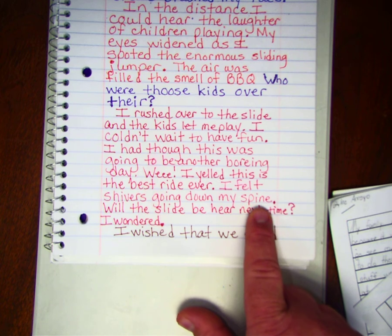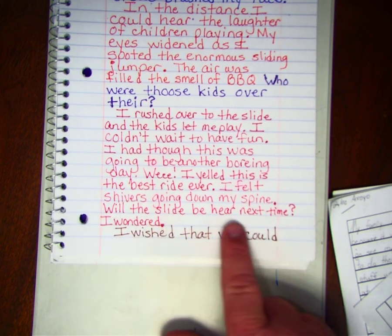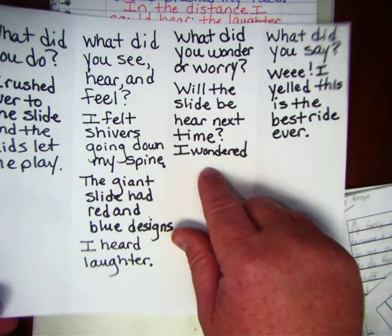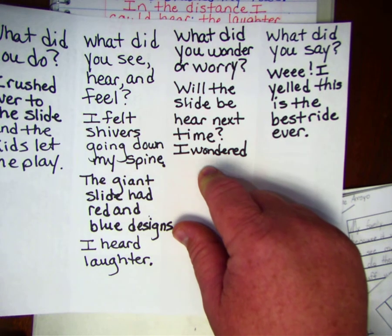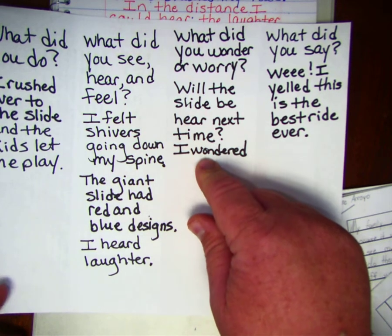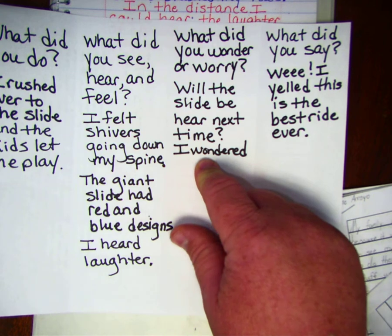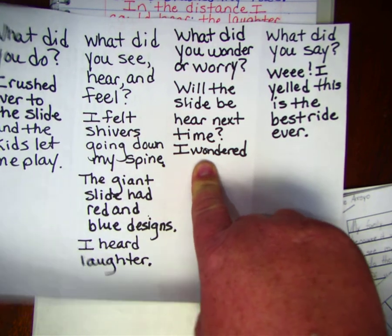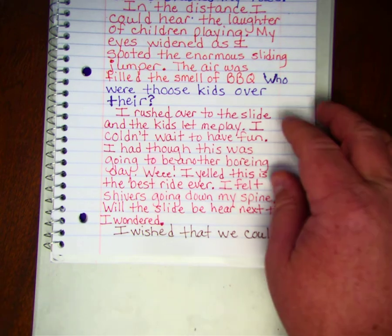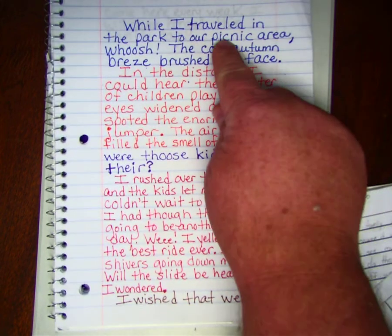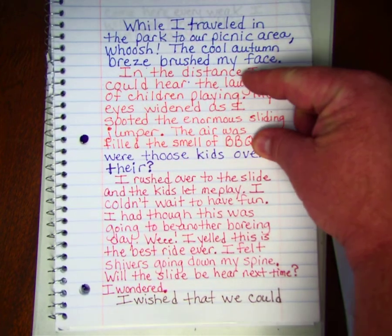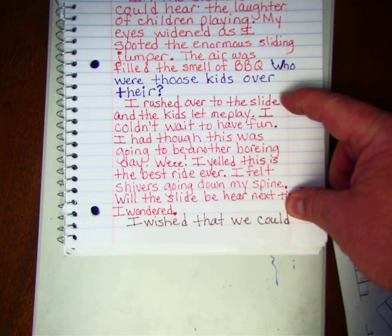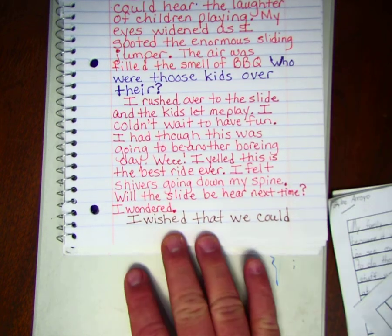For the wonder or worry section, we got 'Will the slide be here next time? I wondered' — I used that one word for word straight from the organizer. When you're done, you'll have your four sections of narrative writing: your beginning, your elaborate detail, your suspense, and then your main event.